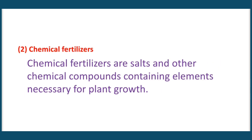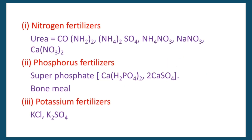Chemical Fertilizers. Chemical fertilizers are sources of chemical compounds containing elements necessary for plant growth. The main nutrients supplied are nitrogen, phosphorus, and potassium. They are classified as nitrogen fertilizers, phosphorus fertilizers, and potassium fertilizers.